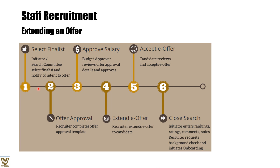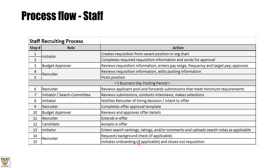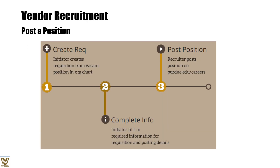Once the offer is extended and accepted, we close the search. At any step if things get bottlenecked, we review those steps. After selecting the finalist, we get approval on the requisite cost and salary, extend the offer, the candidate accepts, and we close the search. The staff approval process flow is much quicker than the employee approval process for line members.